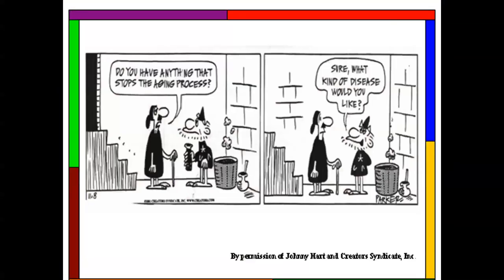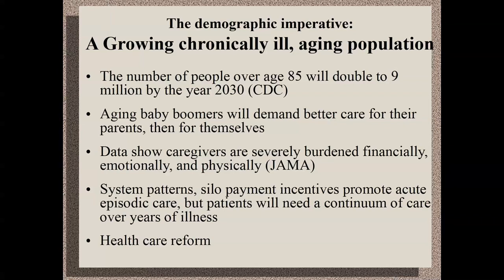We have an aging population. By 2030, there will be nine million people over the age of 85 in the US. In Cuyahoga County — the oldest county in Ohio — that will be about 35,000 to 40,000 people over 85. There are only about 10 geriatricians in the area. We're going to need a little help.